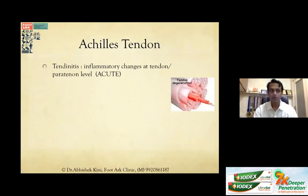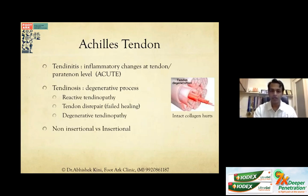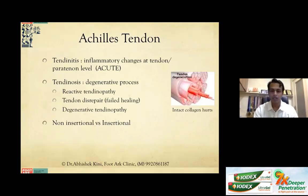Previously labeled as tendonitis — which applies only in the acute phase with inflammatory changes at the tendon or paratenon — more often what we encounter is tendinosis, a degenerative process of reactive tendinopathy that fails to heal, progressing from reactive to degenerative tendinopathy. There are two types: non-insertional, more commonly associated with ruptures, and insertional, seen more in degenerative heel pain.